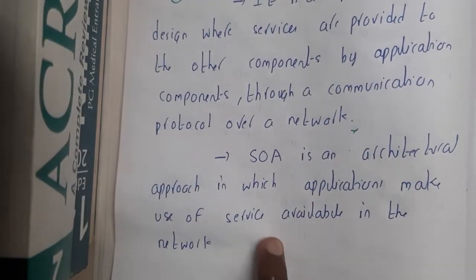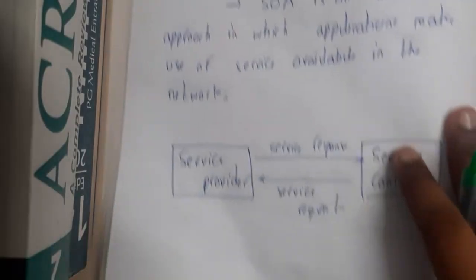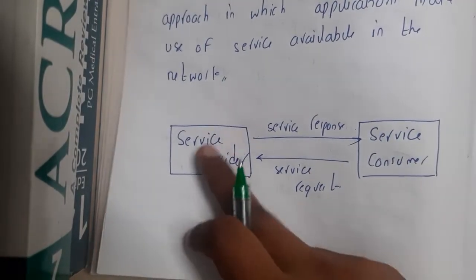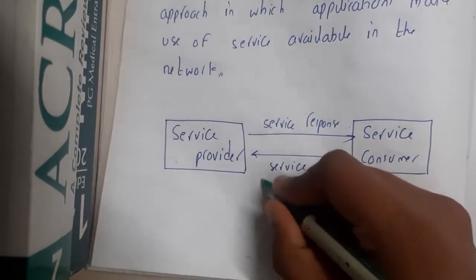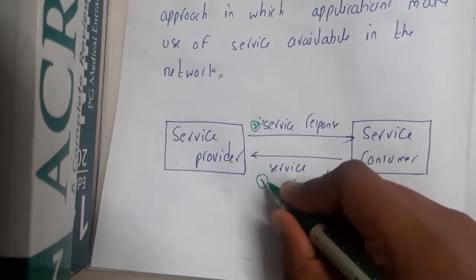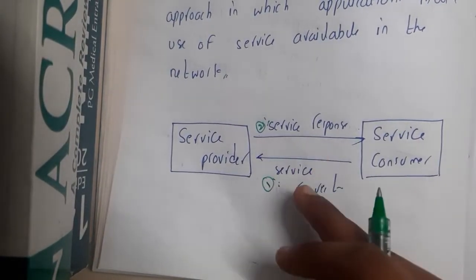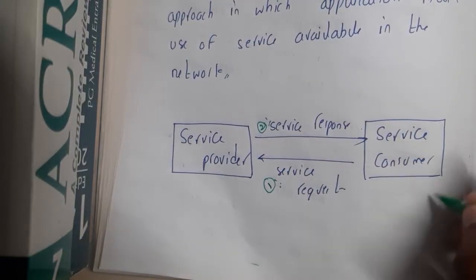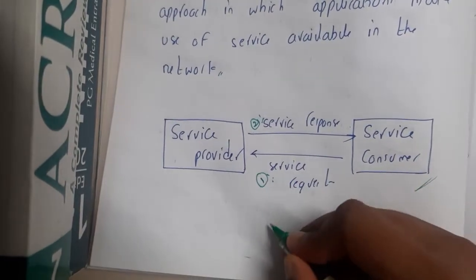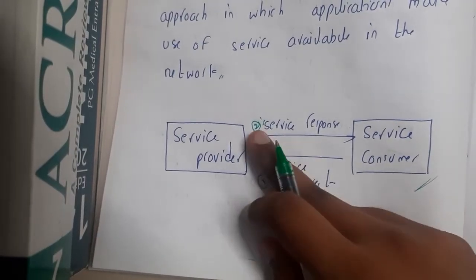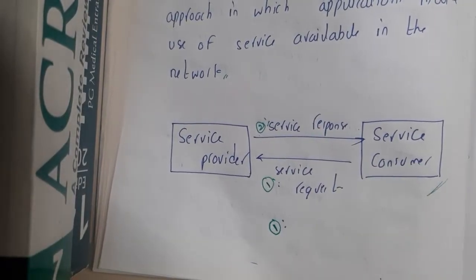SOA is an architectural approach in which applications make use of services available in the network. In the diagram, you have a service provider and a customer. The customer requests items — that is step one — and receives a response — that is step two. It is always better to mention numbers in flowcharts because in examination the evaluator needs to identify the exact flow. Write one: service request, write two: service response.